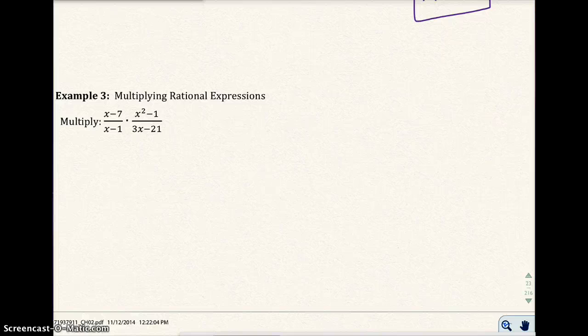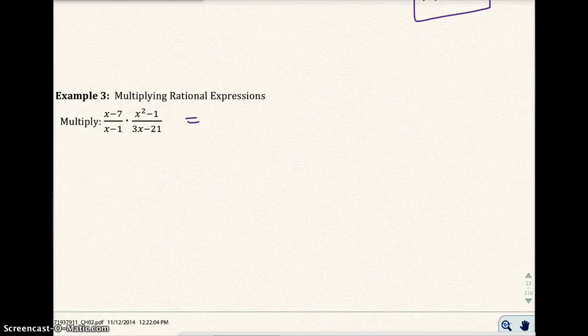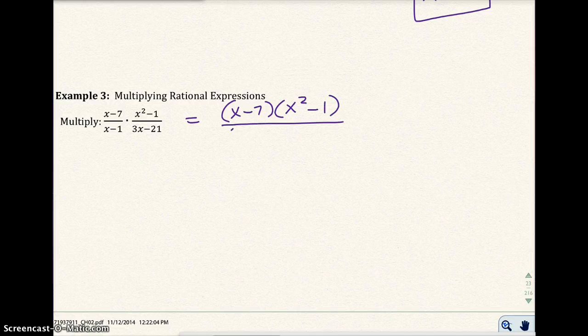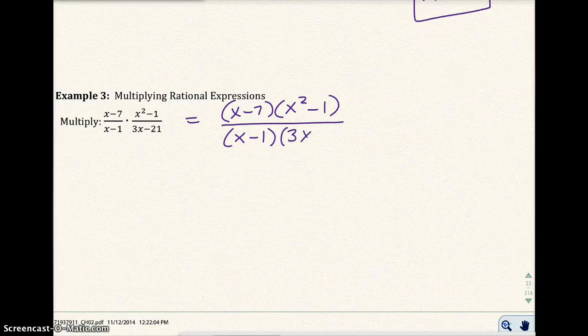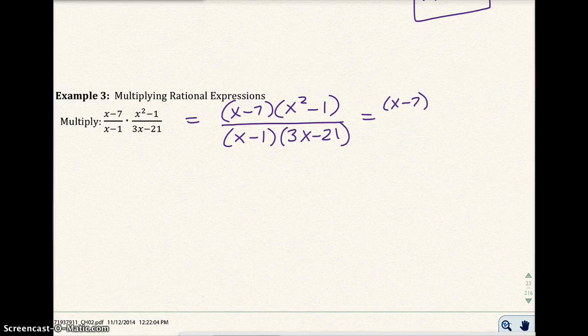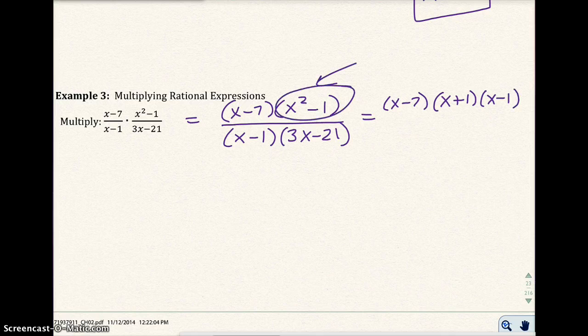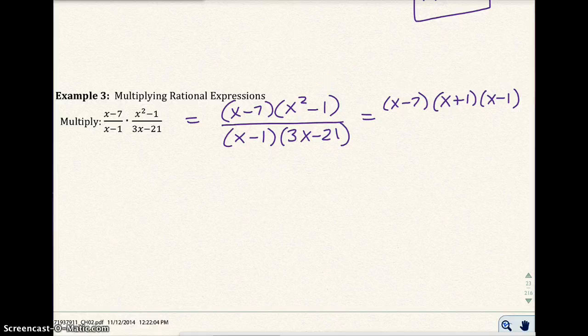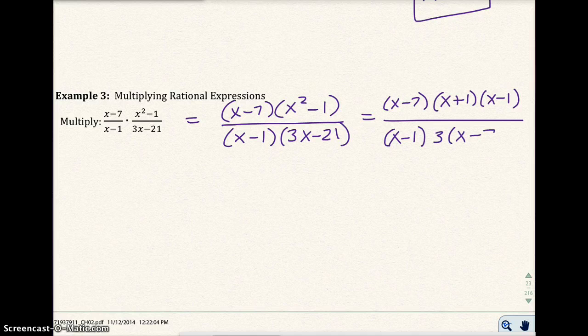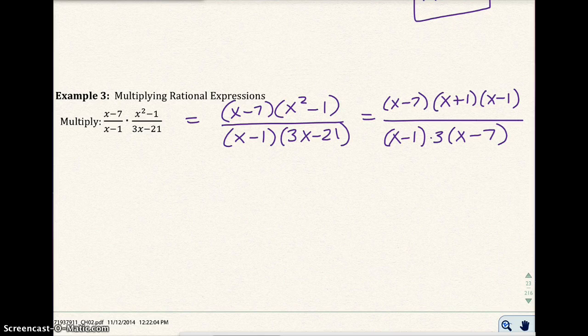Let's go to example 3 and multiply my rational expression. So what I'm going to do is I'm going to go ahead and multiply across the top and bottom. And I multiply across the top and bottom, I get this. I'm not going to multiply it just yet. I'm just going to go ahead and multiply the two factors across the top and bottom. And I'm going to factor. And I get x plus 1, x minus 1. That's from here. Down here in the denominator, I get x minus 1. And then here, I can pull out a 3. I get x minus 7. So these are all factors. At this point, I know that x cannot be 1 or 7.